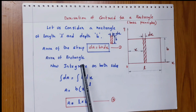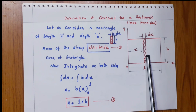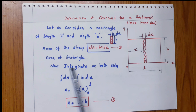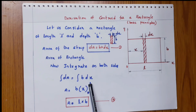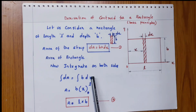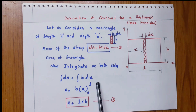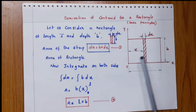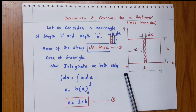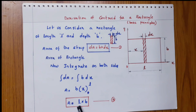Now, the area of the rectangle — how to get the total area by integrating the strip area. Integrating both sides: integral dA equals integral B dx, which equals B into x from 0 to L. By moving the strip from 0 to L, the total area is covered. So, area equals L into B.